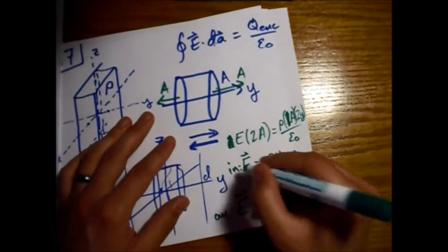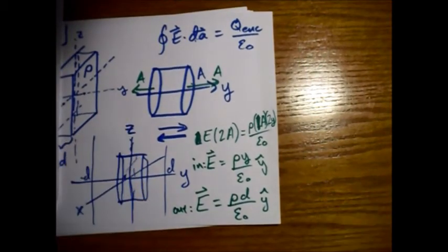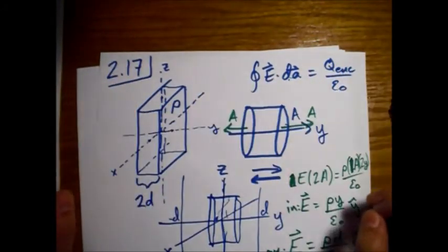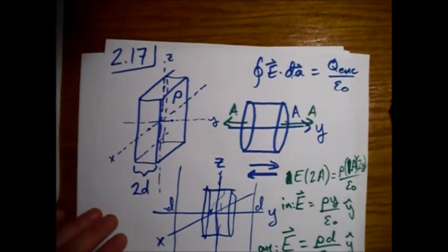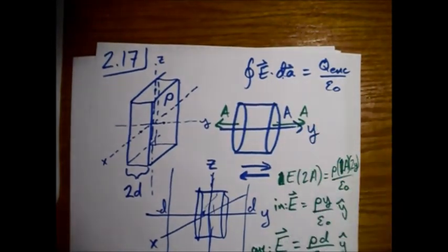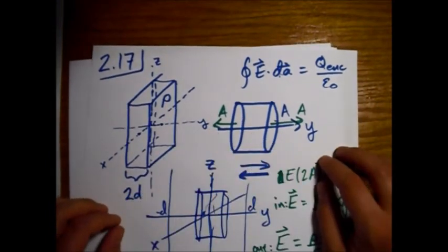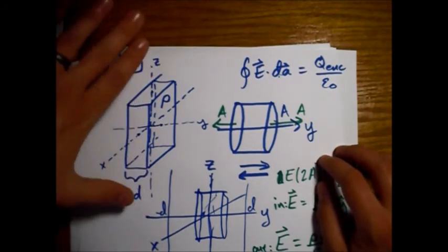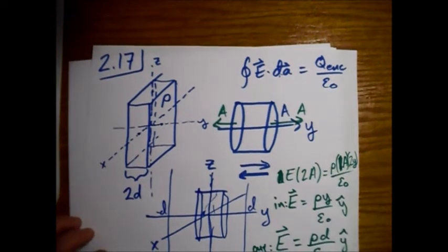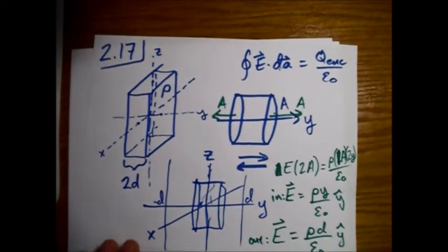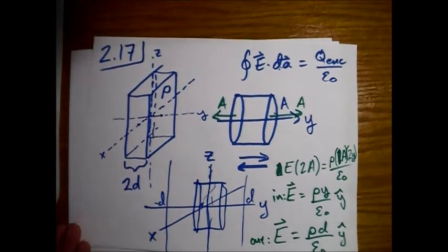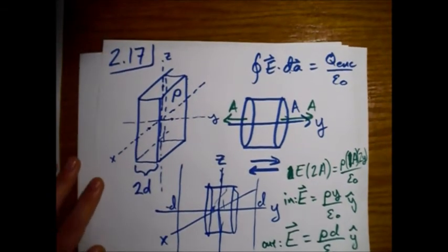Since it's an infinite sheet in the x and z directions, no matter how far away you are from it, it will always look infinite. The further out you go, you can't tell how close you are because this thing is an infinite plane. So the field outside doesn't depend on distance — we get a constant field.